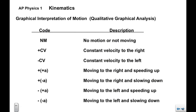Now, very quickly we're going to review the seven types of motion that we've looked at already in position versus time: no motion, plus CV, minus CV, plus-plus A, plus-minus A, minus-plus A, minus-minus A.